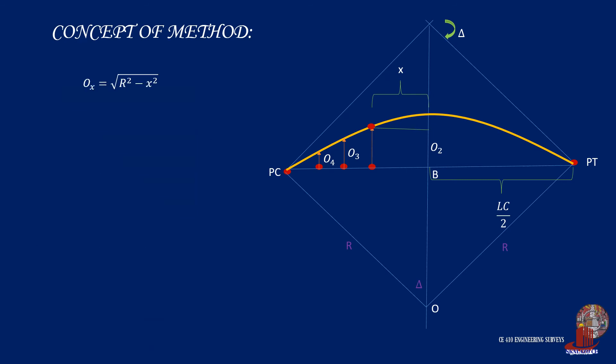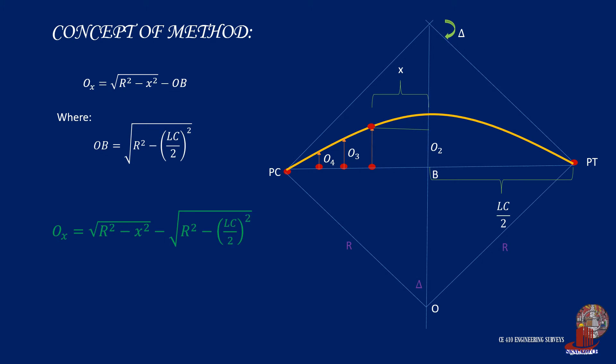With the previous derivative equation of OX — taken as the root of R squared minus X squared minus OB — and OB determined as the root of R squared minus half of the long cord squared, the final equation for this method is: O sub X equals the root of R squared minus X squared, minus the root of R squared minus half of the long cord squared.